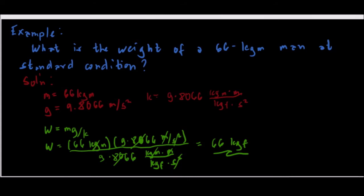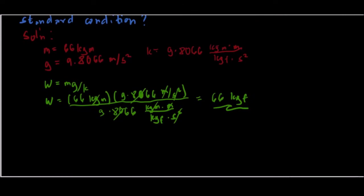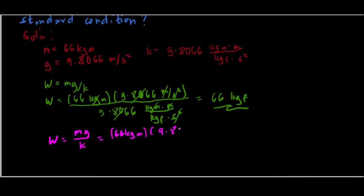You can also express the answer in Newtons. Using the same formula — weight equals mass times acceleration due to gravity times k, where k is the constant of proportionality to get the proper unit — we have 66 kilogram-mass times 9.8066 meters per second squared.